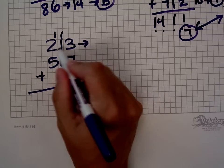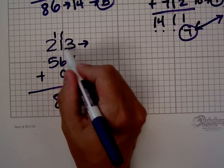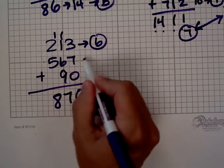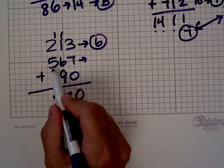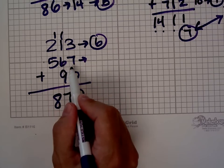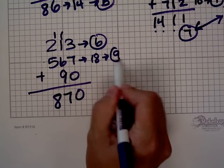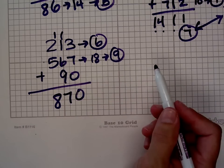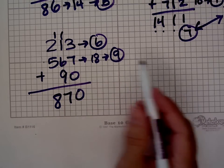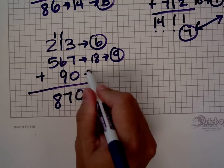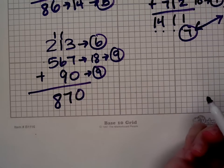The digital root of 213. 2 plus 1 is 3, plus 3 is 6. The digital root of 567. 5 plus 6 is 11. 11 plus 7 is 18. The digital root of that is 9. Guess what that means? Whether you knew it or not, that number is divisible by 9. 90, the digital root is 9. That number is also divisible by 9, but I bet you knew that.